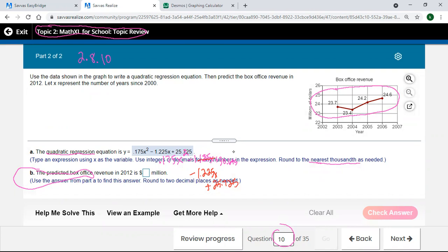And it says round to two decimal places as needed. So what I'm going to type in is 0.175 times 12 squared minus 1.225 times the 12 plus the 25.725. All right, so let's put that in Desmos and then we'll enter and come back and enter that and see how that turns out.